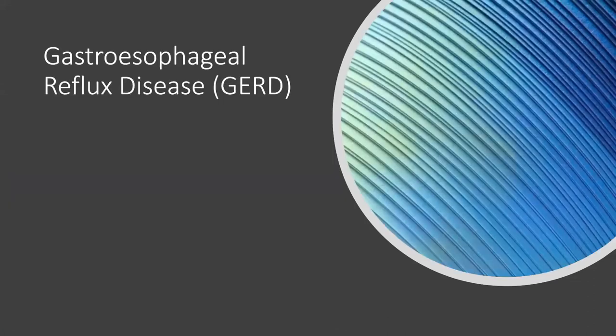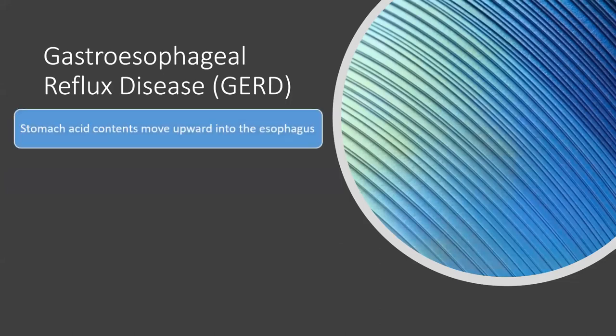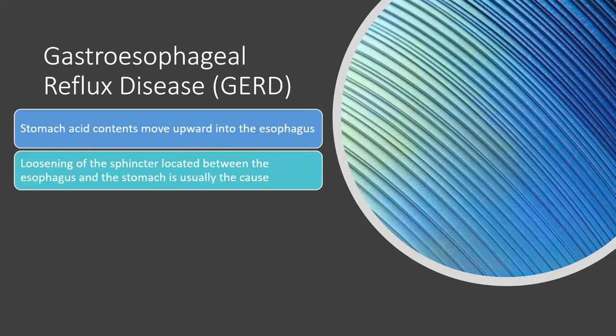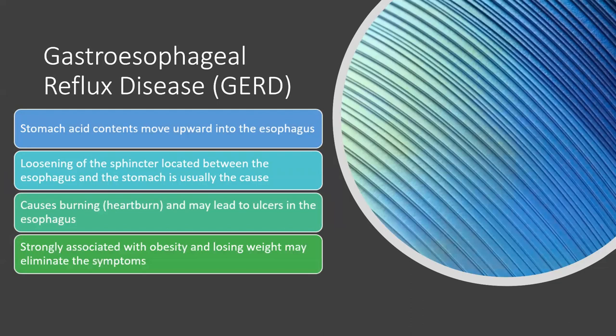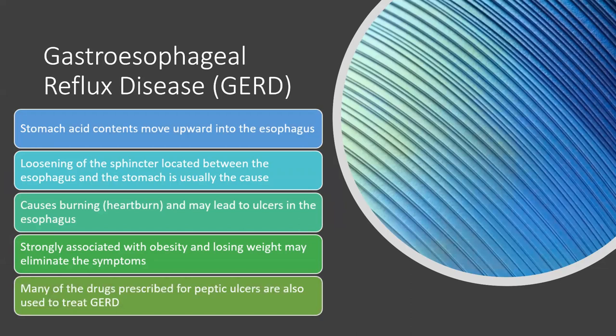Gastroesophageal reflux disease (GERD) occurs when stomach acid contents move upward into the esophagus. The loosening of the sphincter between the esophagus and the stomach is usually the cause. It causes heartburn and may lead to ulcers in the esophagus. GERD is strongly associated with obesity, and losing weight may eliminate symptoms. Many drugs prescribed for peptic ulcers are also used to treat GERD.